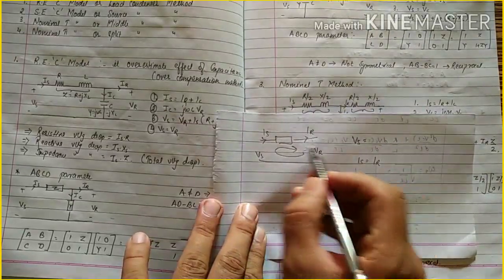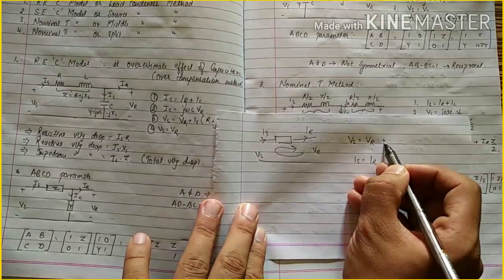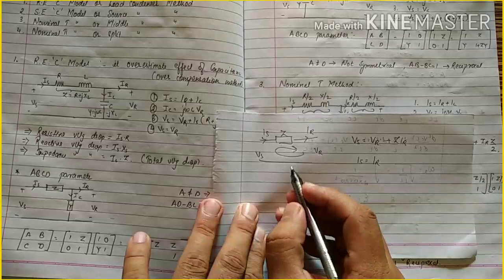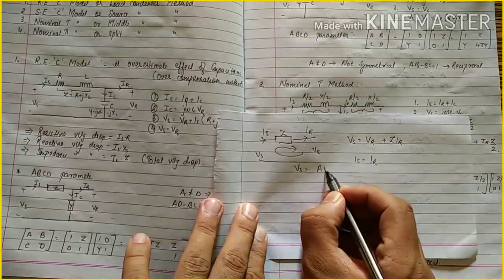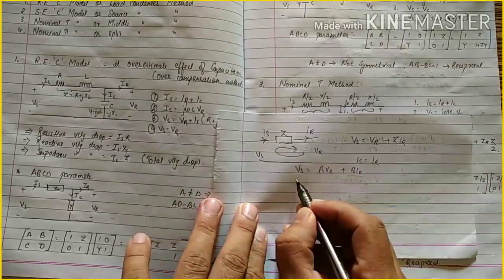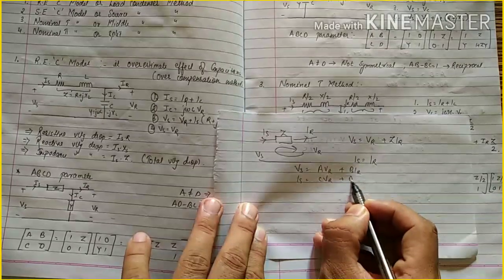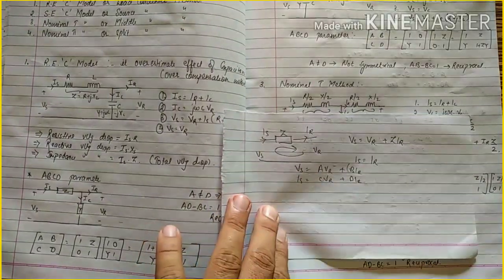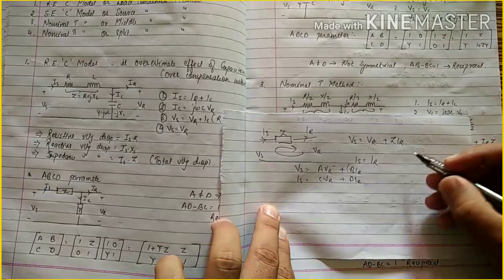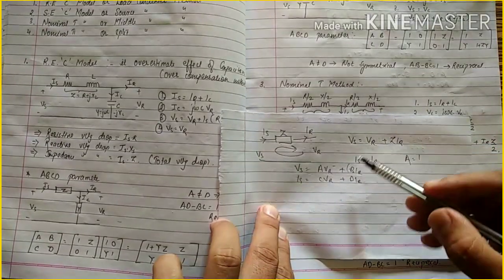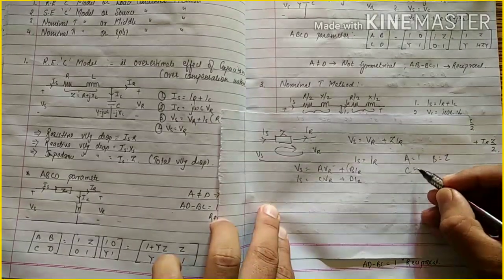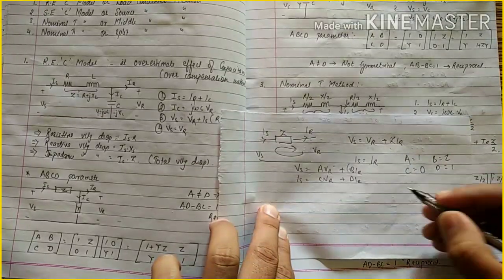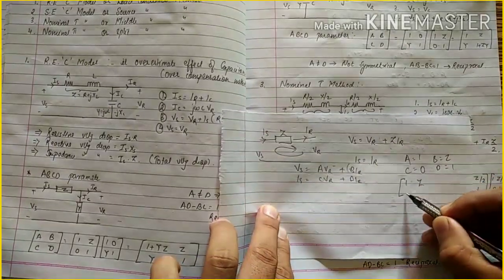Applying KVL, VS equals VR plus Z into IR. We know the ABCD formula: VS equals A·VR plus B·IR, and IS equals C·VR plus D·IR. Comparing, A equals 1, B equals Z, C equals 0 (since VR is not present in the IS equation), and D equals 1. In matrix form this is [1, Z; 0, 1].